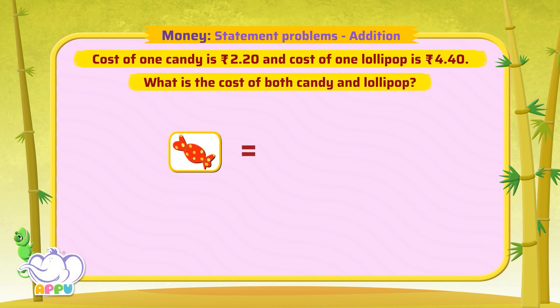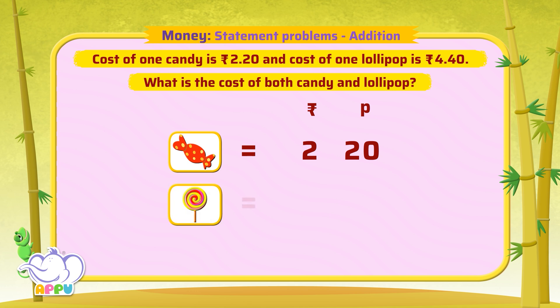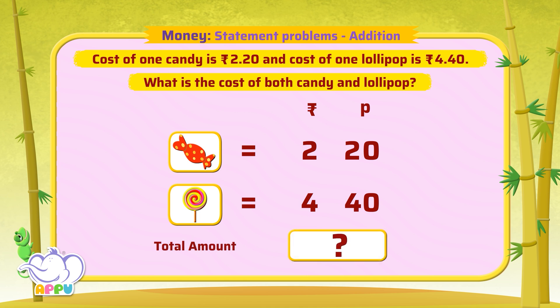The cost of one candy is 2 rupees 20 paise, and the cost of one lollipop is 4 rupees 40 paise. What is the cost of both the candy and lollipop?